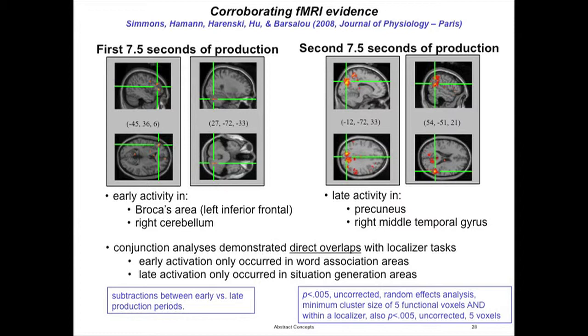In the second seven and a half seconds, we get precuneus and right temporal gyrus activity — areas more likely to be active when generating imagery about situations. We get a lot of grief over the seven-and-a-half-second window because it's an incredibly long period of time, but what I think is amazing is that we even get a result at all — and these are really robust results. What it suggests is that if everything were happening simultaneously, if you were generating word associates and simulations at the same time, you wouldn't see these differences.